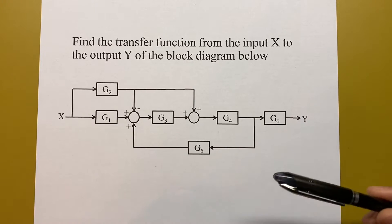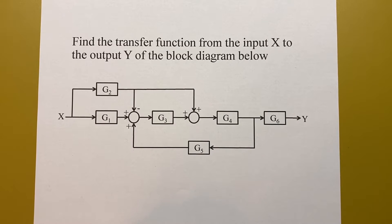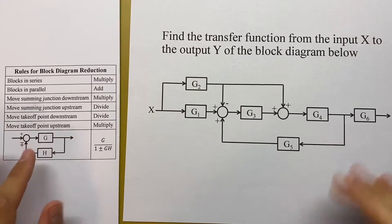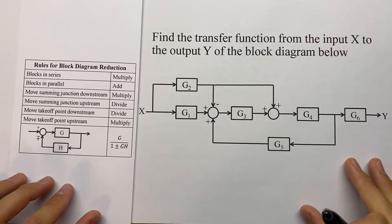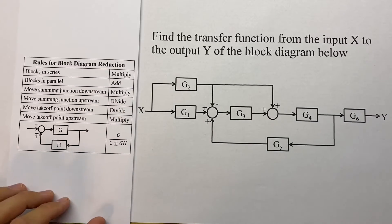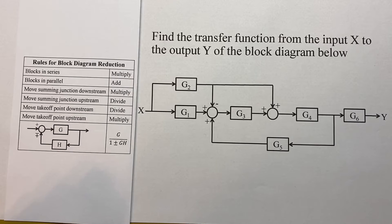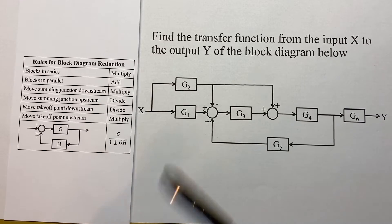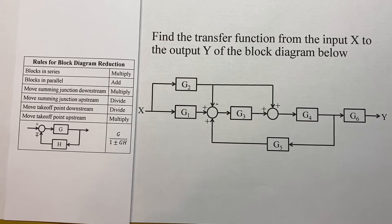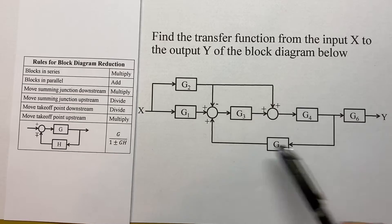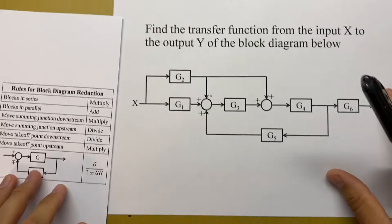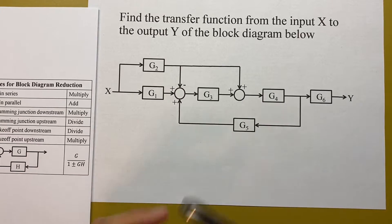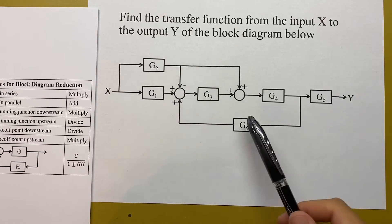In this video, we're going to be solving this example problem here, and we're going to be doing it with block diagram reduction by using these rules here. If you're wondering where these rules came from, I also made a video where I go through and derive all of these. But for this video, we're just going to assume that we know them and use them to solve the problem. The problem says: find the transfer function from the input x to the output y of the block diagram below. So what we want to do is basically take all of this and reduce it into one transfer function that's some combination of all these different g's.